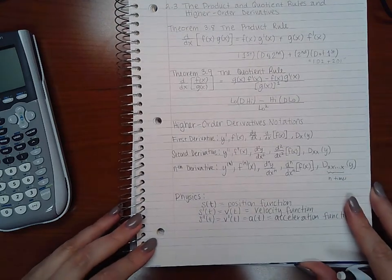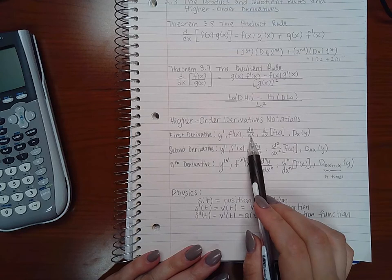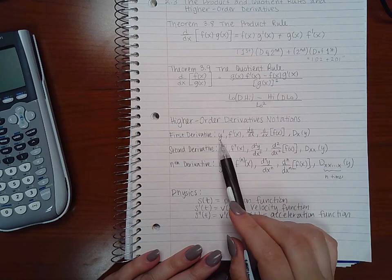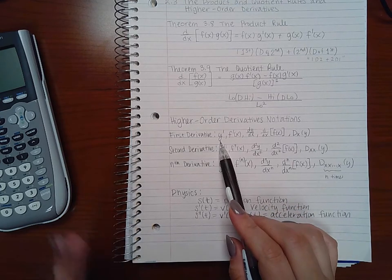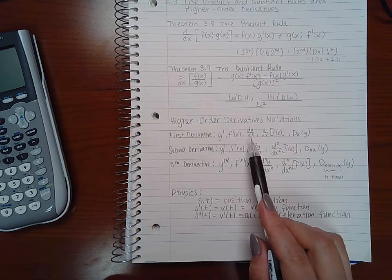For higher order derivatives, we have to talk about the notation. We've seen these first three notations and even this one. So when we write y prime, that means the first derivative of y. When we write f prime of x, that means the first derivative of x.